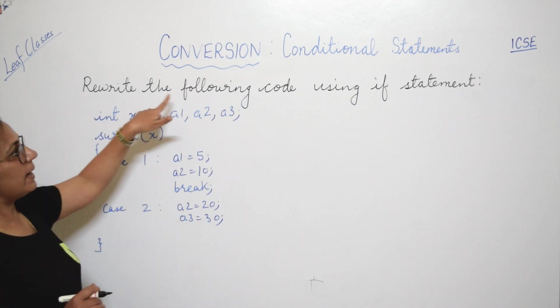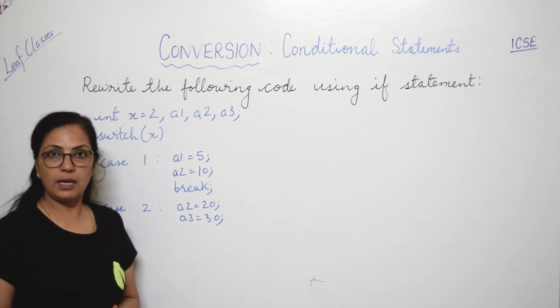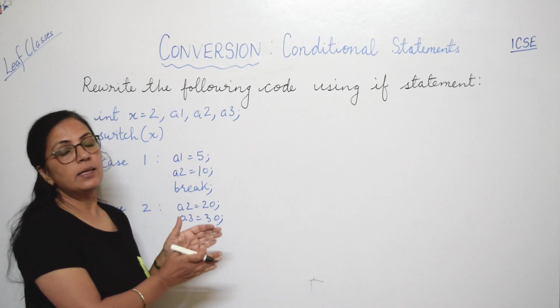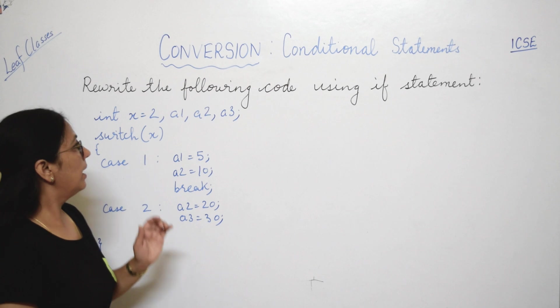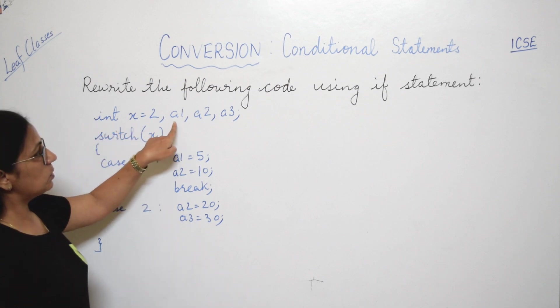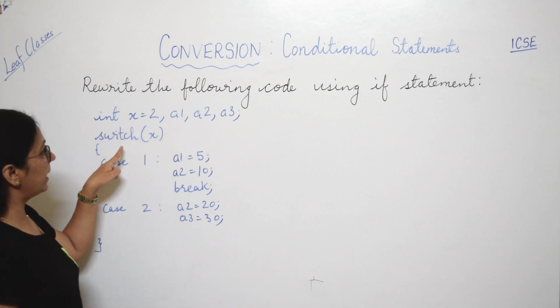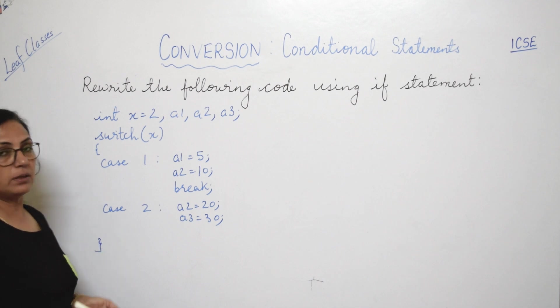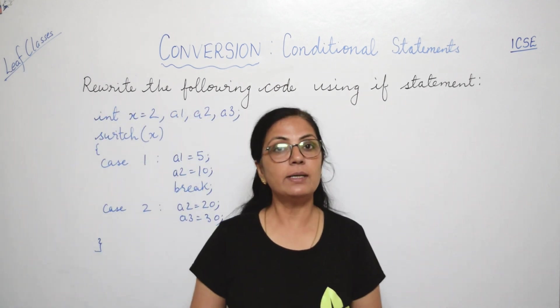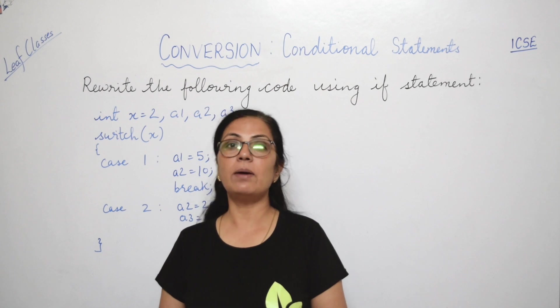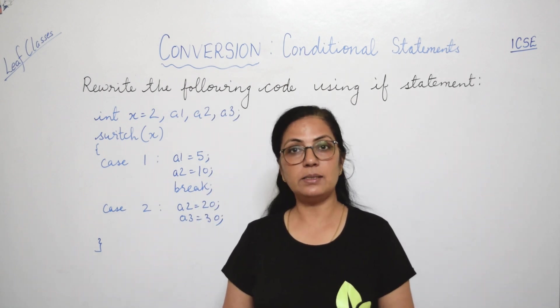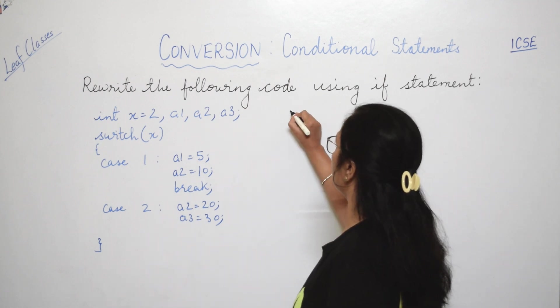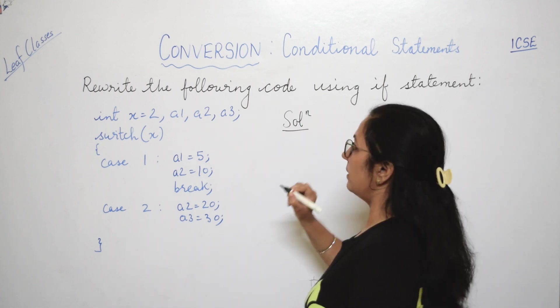Now children, the next question is: rewrite the following code using if statement. Children, again here I am telling you that please don't write the whole program. Only you have to convert the given statements into the required ones, right? The code is int x equals to 2, a1, a2, a3. These three variables are declared. Switch x, case 1 values are there, case 2 values are there. Now here if you notice, default statement is missing. So default is optional statement, right? If none of the matching case is found, then only the default statement is executed. Otherwise it is not required, right?